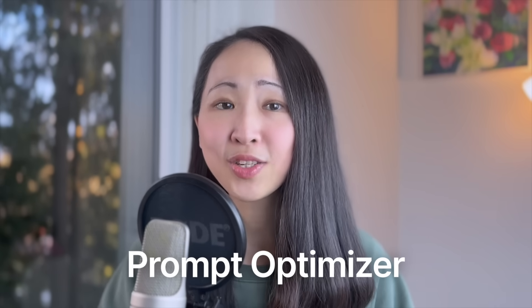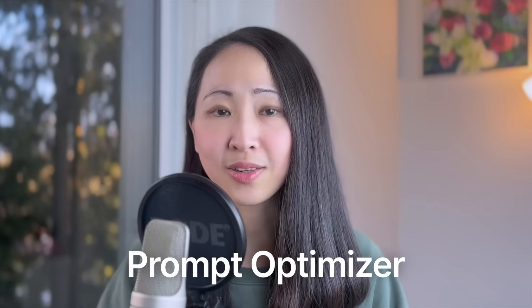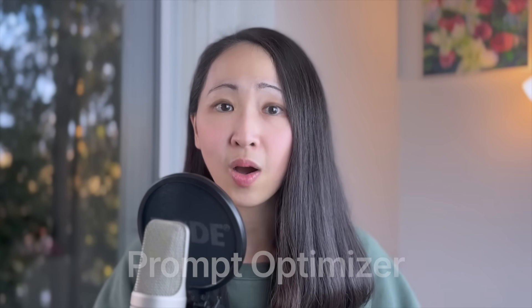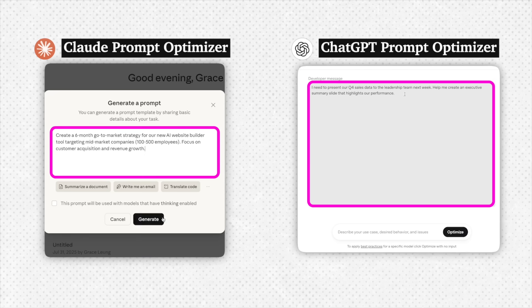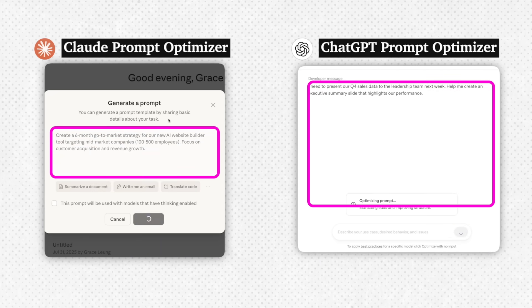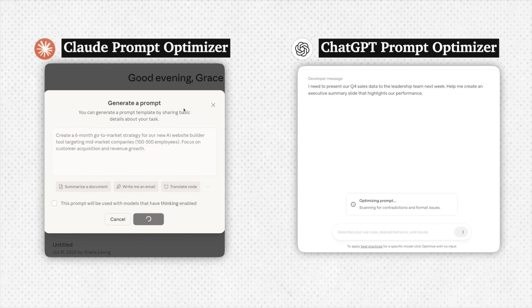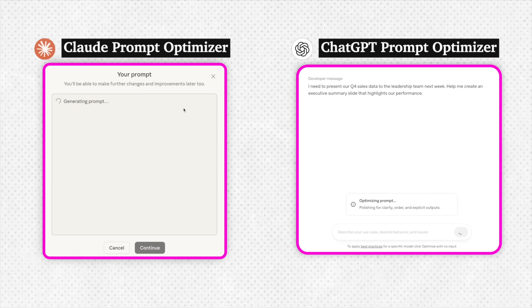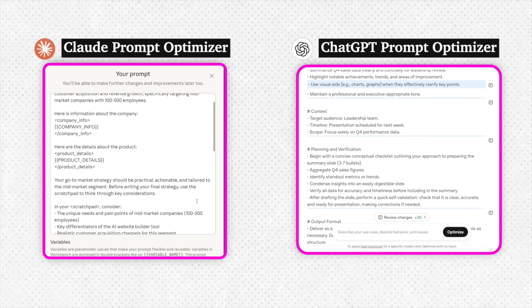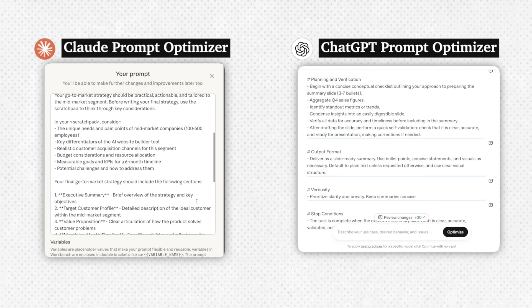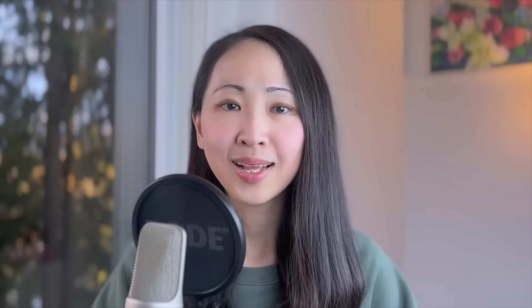Another bonus step: use the official prompt optimizer. Different AI models have their own prompting rules, so you can go to the official prompt generator, describe what you want in plain language or paste your initial prompt, and it will generate and optimize the prompt that works best with that model. Links are in the description.